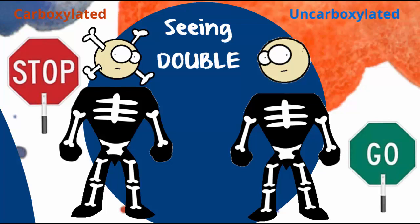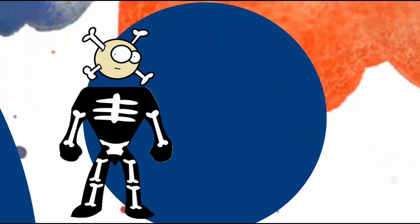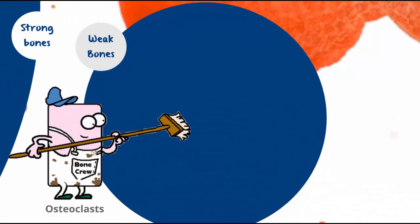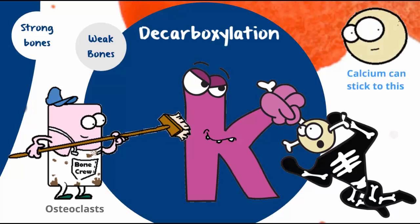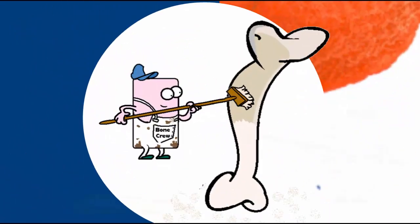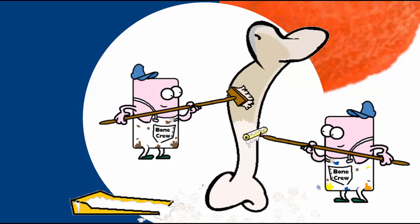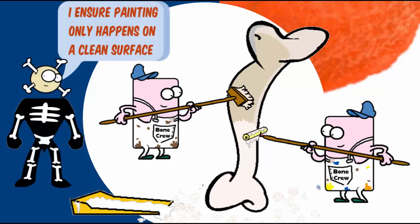Let me explain what happens. The carboxylated version hangs around in the bone matrix until another clan of bone cells — the osteoclasts — produce a vitamin K dependent enzyme that pulls the carboxyl groups off, making the uncarboxylated version. Calcium sticks to this uncarboxylated version like super glue. So only when osteoclasts are busy is new bone formed.